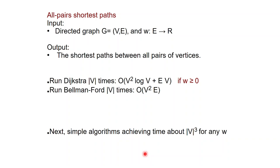In this lecture we are going to study the all pairs shortest paths problem. The input is a directed graph G with vertices V and edges E and also a weight function which maps the edges into integer numbers. The output that we want are the shortest paths between all pairs of vertices, so the output length would be quadratic in the number of vertices.